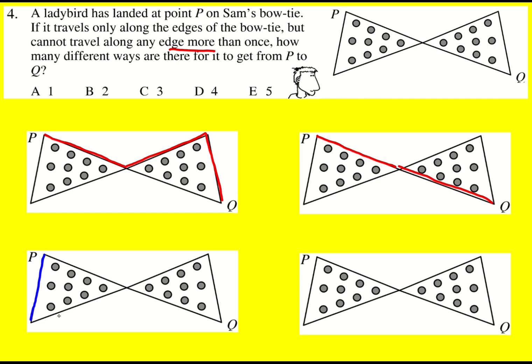Then if the ladybird goes down and then up to get to the centre, then it's going to be the same idea. We can either go up and then down, or just down. So overall there's going to be four ways.